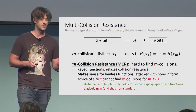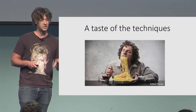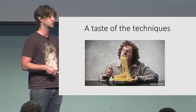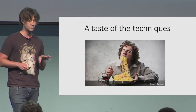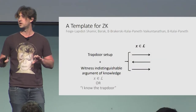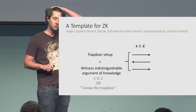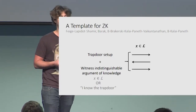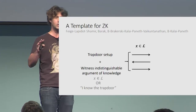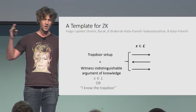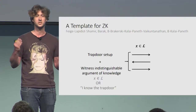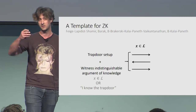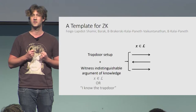Let me give you a general template for constructing zero-knowledge protocols, which was followed in previous work constructing computational zero-knowledge in three messages. The protocol has two steps. In the first step, the prover and verifier run a sub-protocol to establish some sort of trapdoor. In the second step, the prover proves that either the statement x is correct, or that it knows this secret trapdoor. The trapdoor should be hard to find, so if the prover convinces the verifier, the statement must be true.